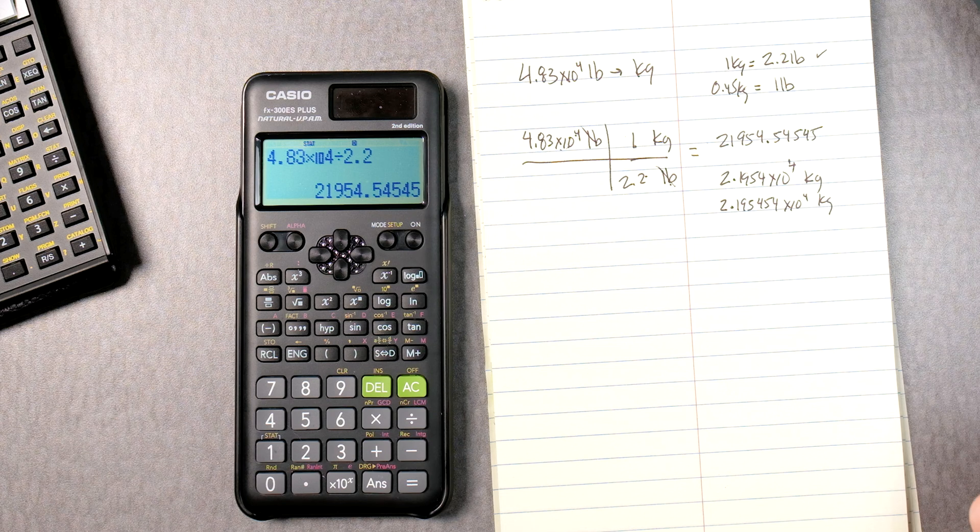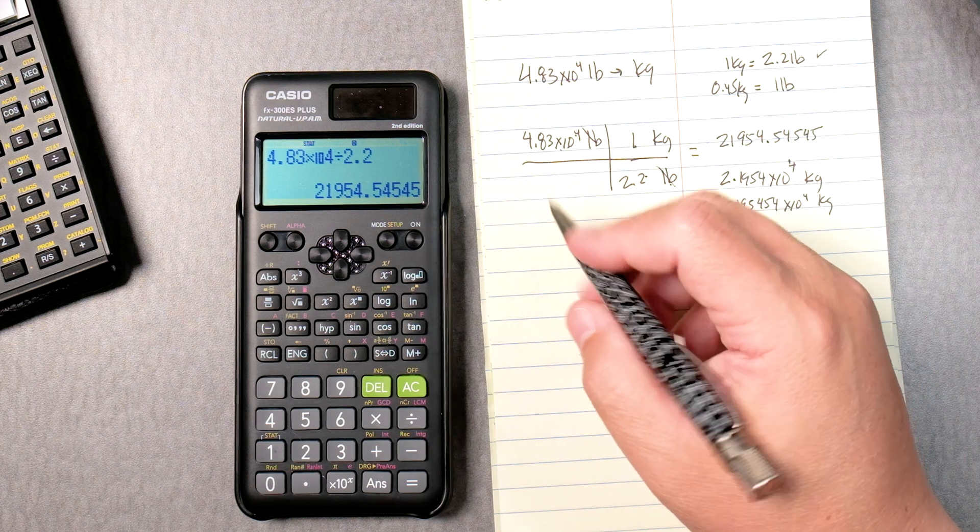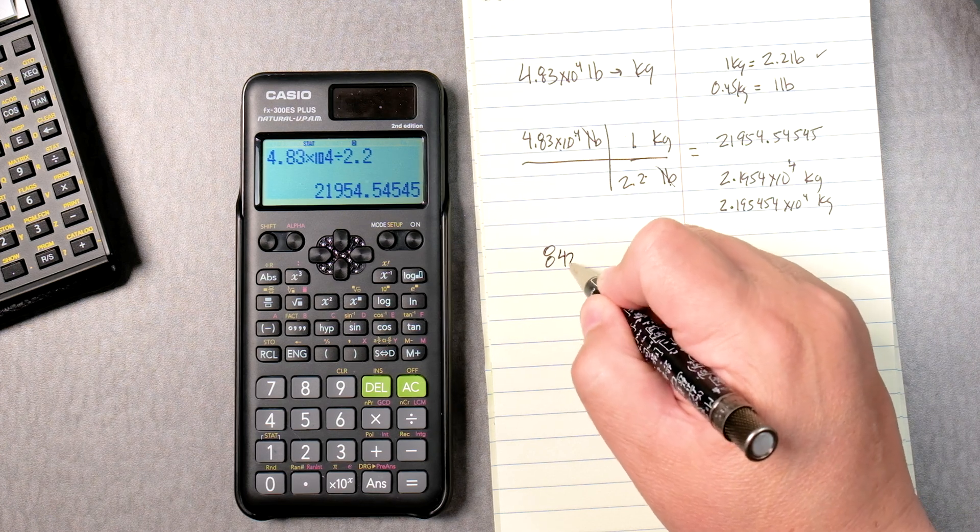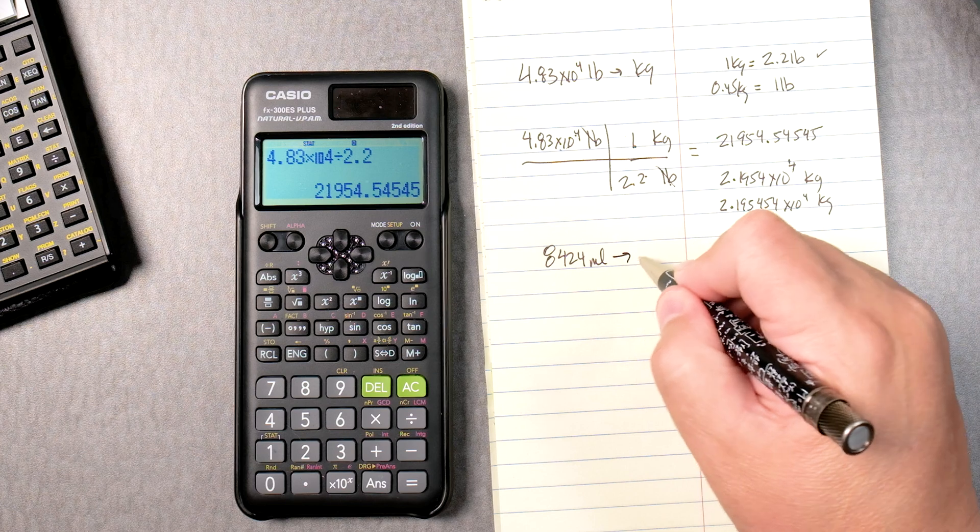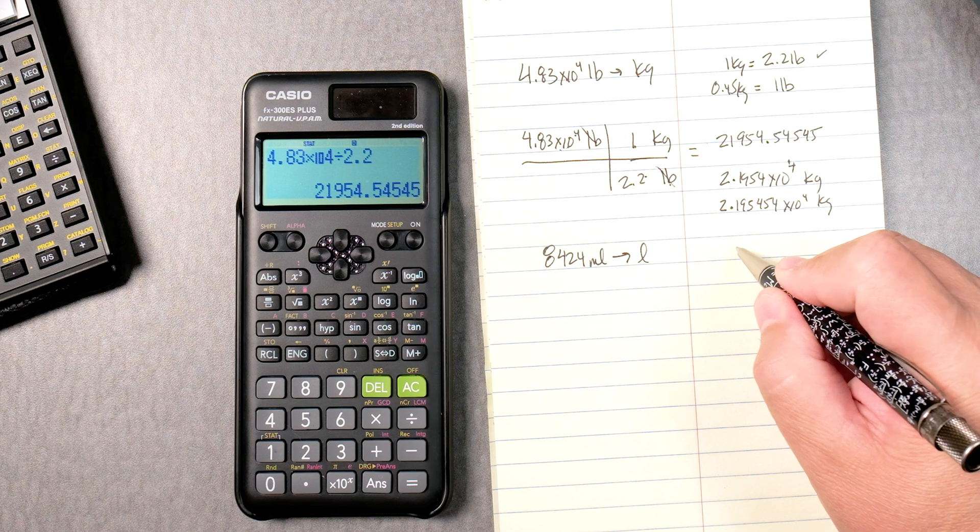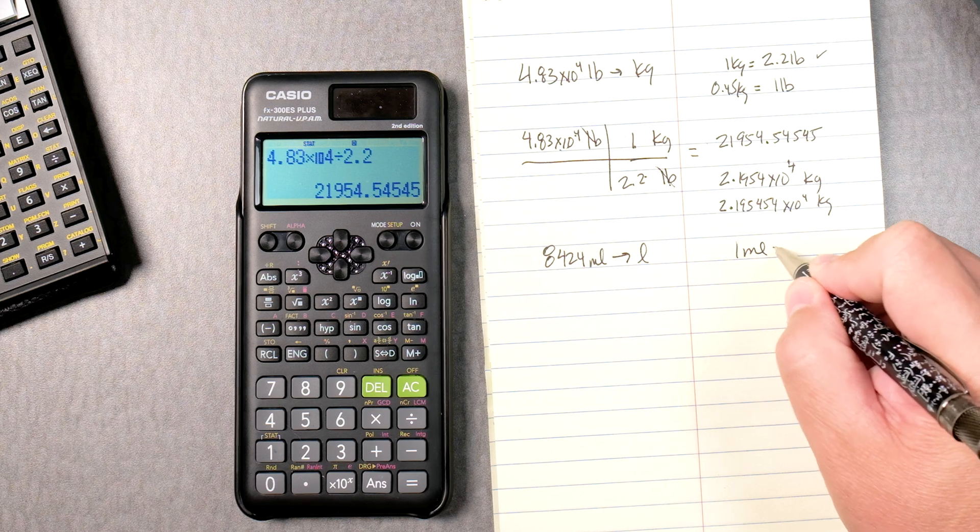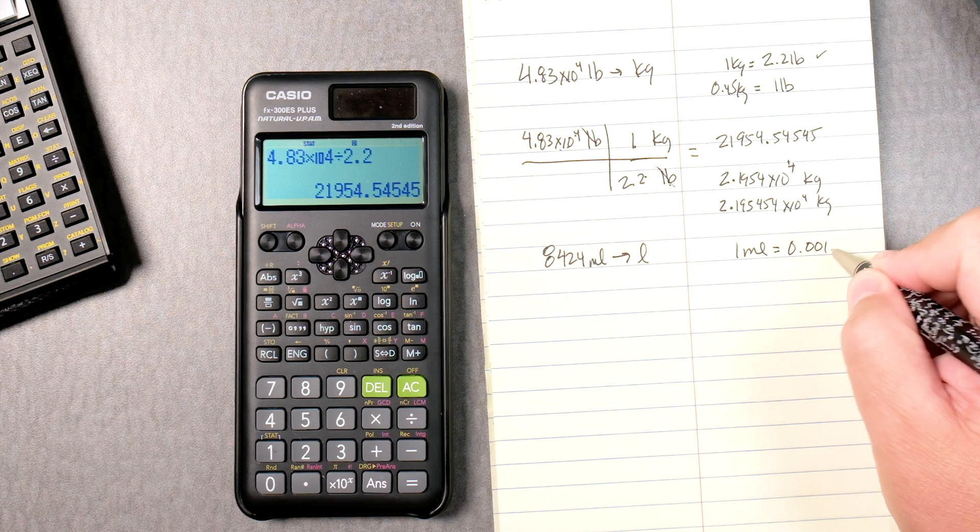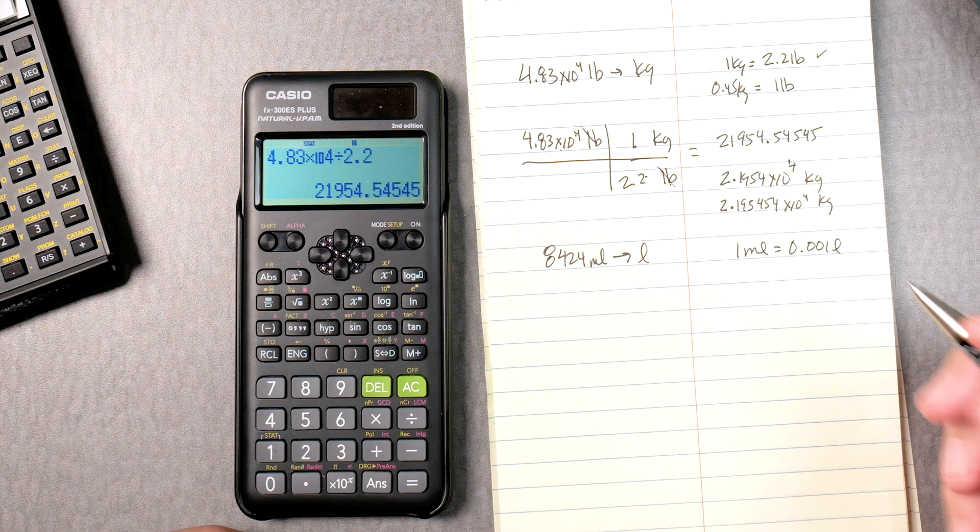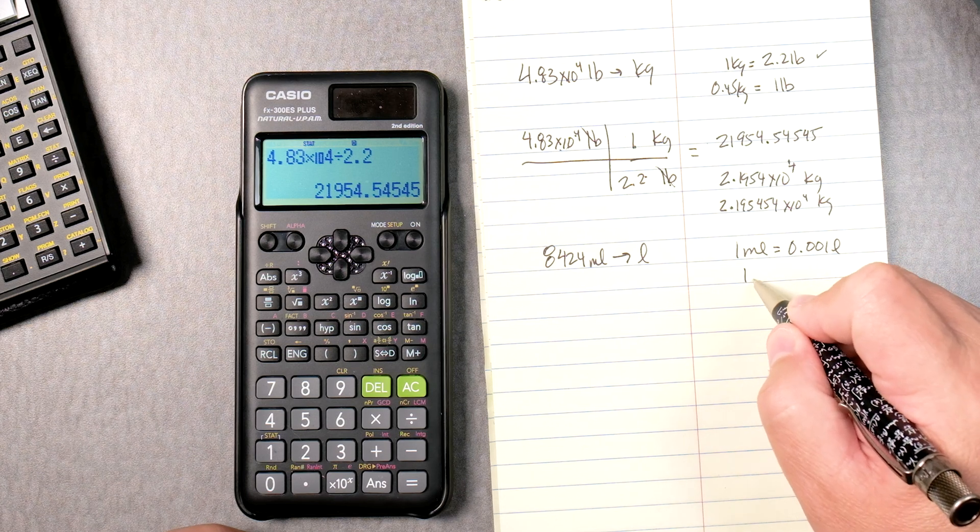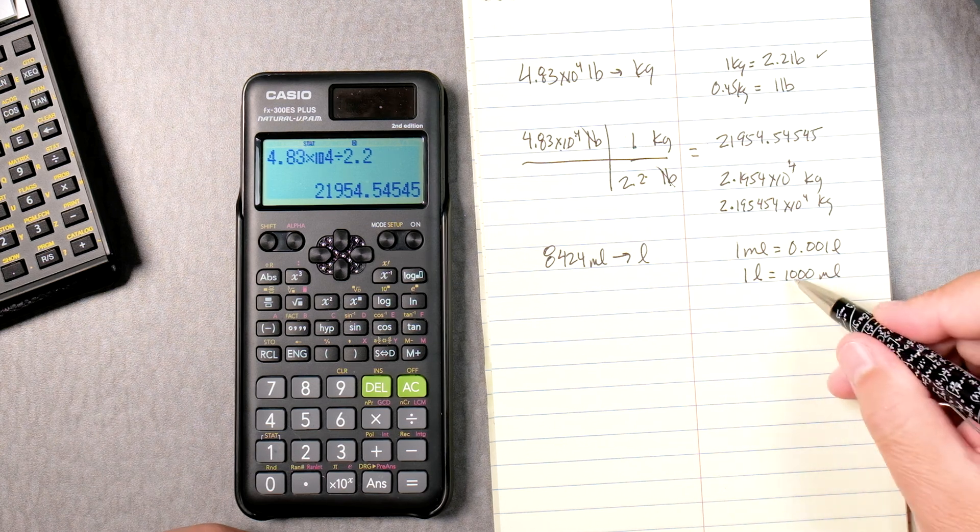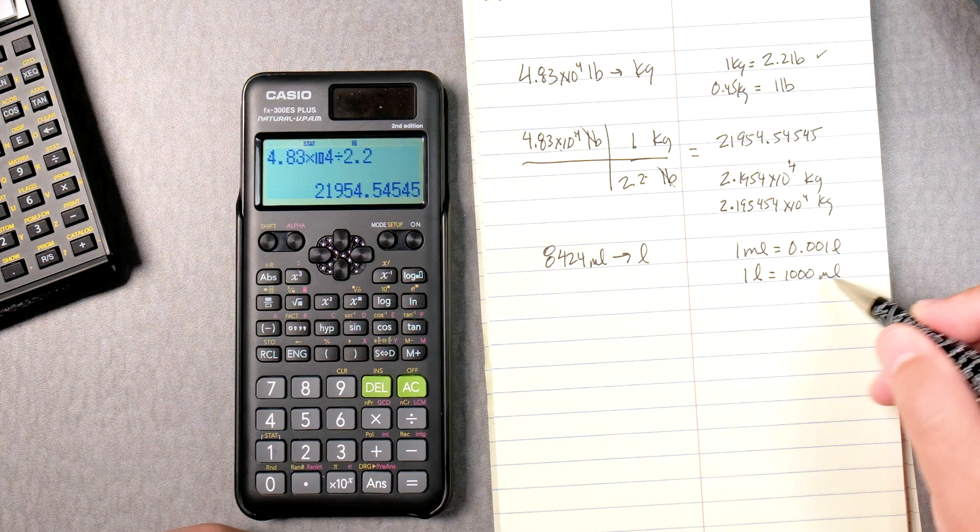Another one, let's say you had something like 8,424 milliliters, and they want you to change it into liters. A lot of the times, a lot of teachers like you to memorize 1 milliliter is equal to 0.001 liters. A little bit hard to remember, especially if you're doing it for the first time.